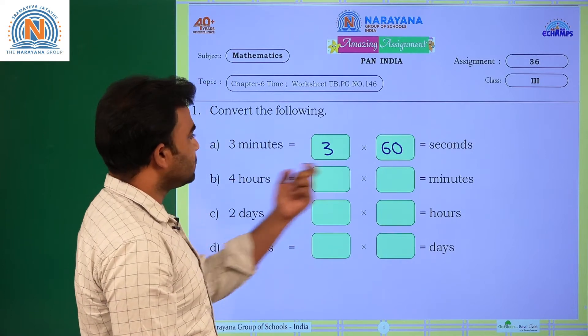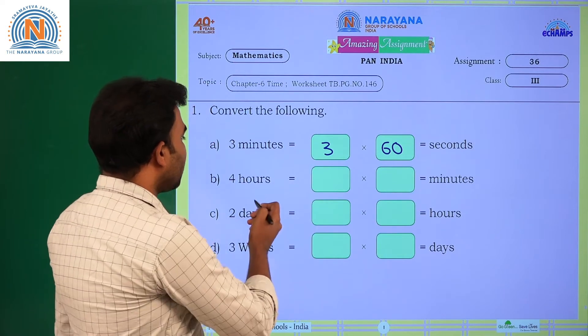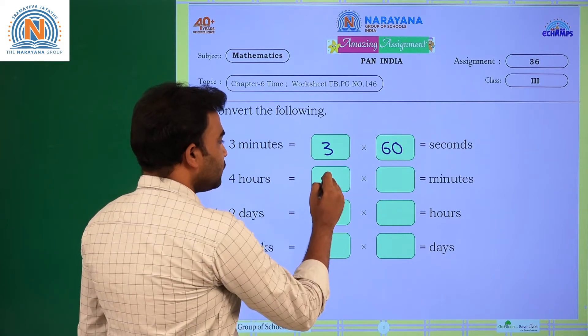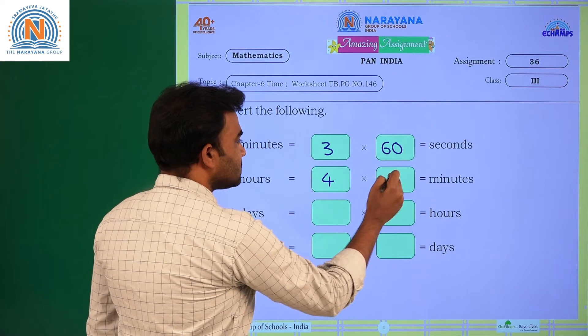Next one, hours into minutes. One hour equals 60 minutes, then 4 hours equals 4 into 60.